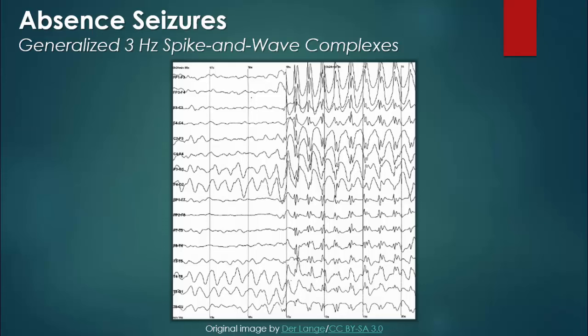This EEG was recorded while a patient was experiencing an absence seizure. The first characteristic finding that may come to your attention is the sudden change in activity that occurs about halfway through this reading. While the first half is normal, with a posterior dominant rhythm, the second half begins with an abrupt onset of epileptic discharges.